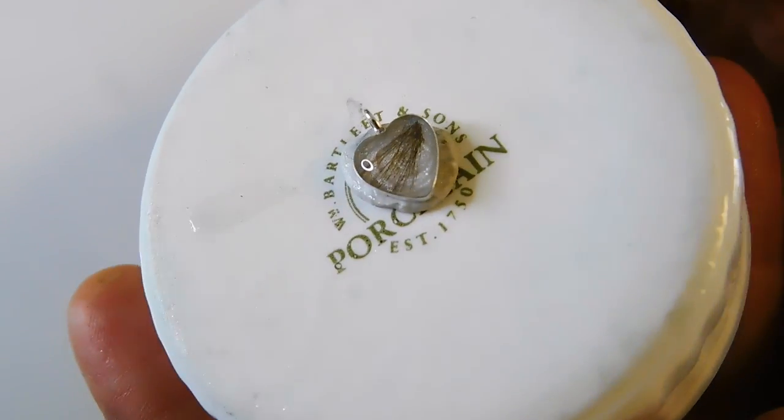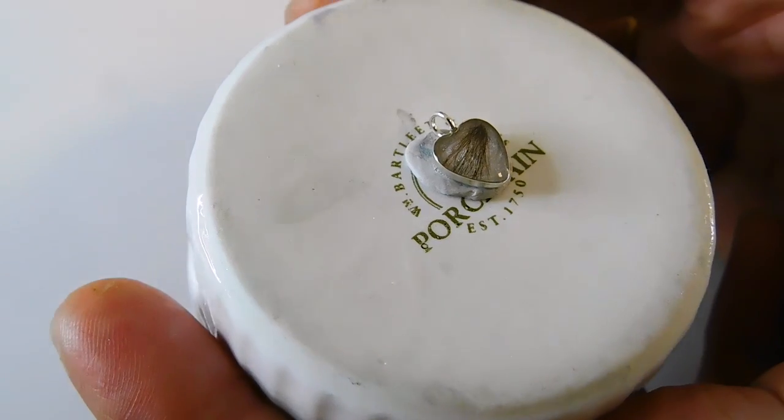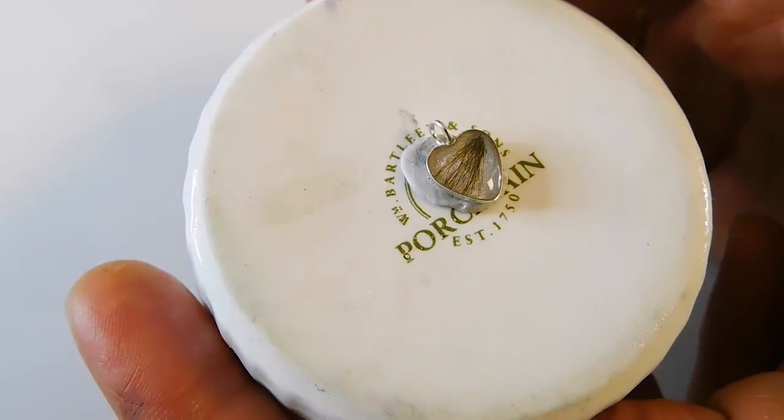You could do this doming in a single layer but UV resin can get hot if it's too thick and shrink a little so I always work in thin layers. Allow it to cool completely then cure again and repeat this a few times cooling down in between.